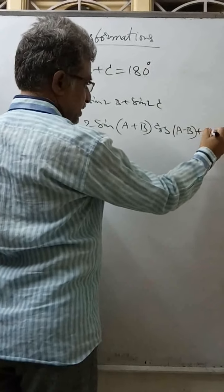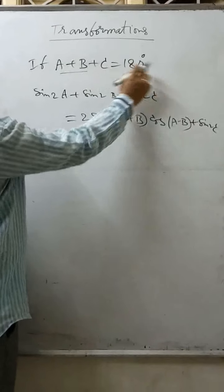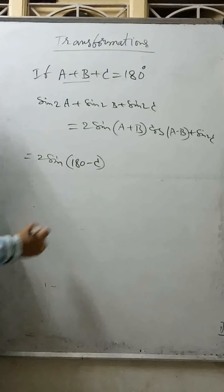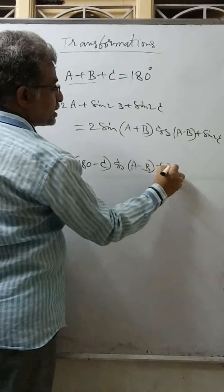So sin 2A plus sin 2B equals 2 sin(A+B) cos(A-B), plus sin 2C as it is. Now since A+B+C=180°, A+B = 180-C, so this becomes 2 sin(180-C) cos(A-B) plus sin 2C. Sin(180-C) equals sin C, so we get 2 sin C cos(A-B) plus 2 sin C cos C. Taking 2 sin C common gives 2 sin C [cos(A-B) plus cos C].